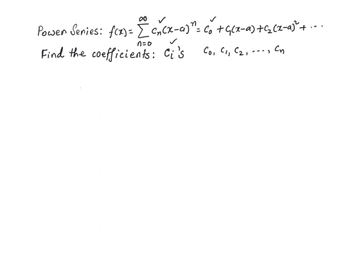In general, c sub n — that is the goal. We are going to find these values by taking repeated derivatives of the function and evaluating those derivatives at the point x equal to a. So starting with f of x itself: what is f of a? If we evaluate the function at x equal to a, all the terms on the right-hand side go away except the first term, so f of a is nothing but c sub zero.